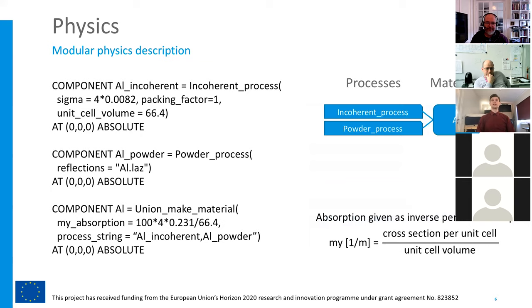Here's a quick example on how you would set up aluminum with incoherent and powder scattering. First, we do the incoherent process component, we insert the incoherent cross section and the unit cell volume. Then we add a powder process with a file that contains all the reflections for aluminum. That's our two processes.